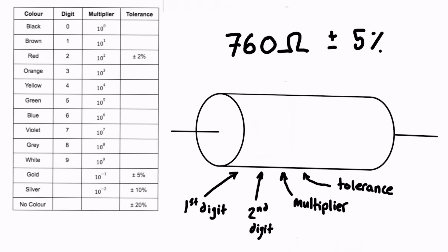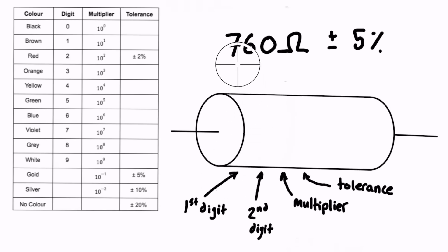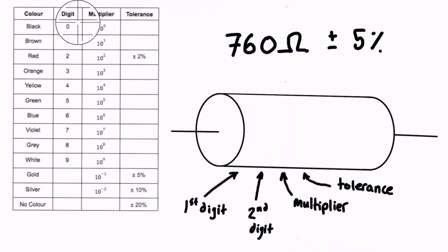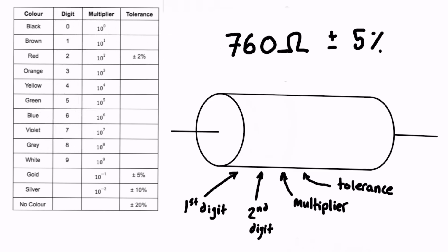We can work backwards from what we already know. The first band is going to represent the first digit. Our first digit is 7, so we pop into the table and look where is 7 — and that is a violet color, so we can go and draw that on.